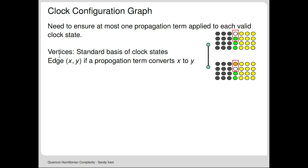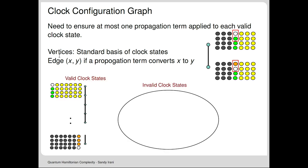The configuration graph has each vertex as a pattern of colors on the 2D grid. Many are invalid (with an energy penalty) and some are valid. The correct sequence of the clock going from time 0 to time T constitutes a path—exactly one propagation term applies to each configuration. This gives a nice clean path, while the rest are high-energy invalid states.